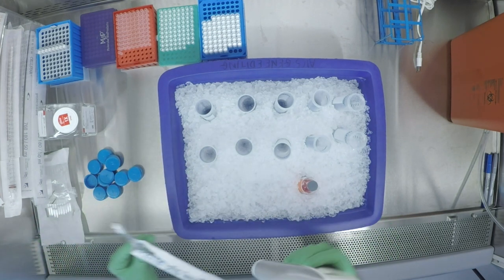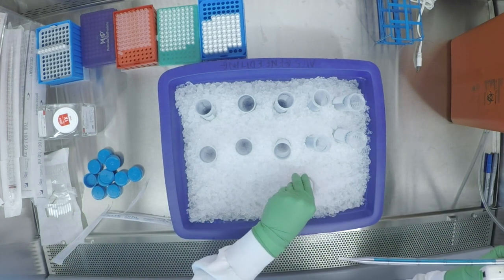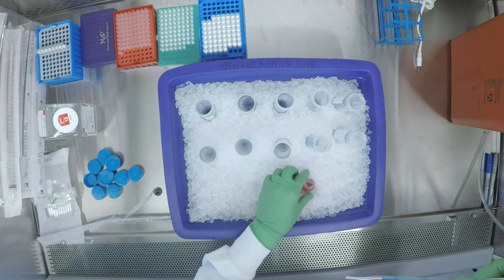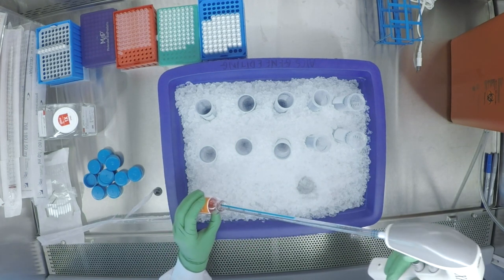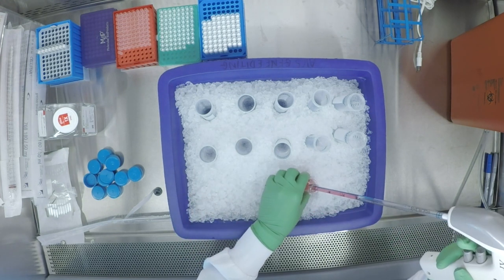Working quickly, aliquot one ml of Matrigel into each 50 ml conical using the 5 ml pipette. Then using the same pipette, quickly aliquot the remaining Matrigel into the conicals. It is an option to change to another cold pipette midway if you'd like.